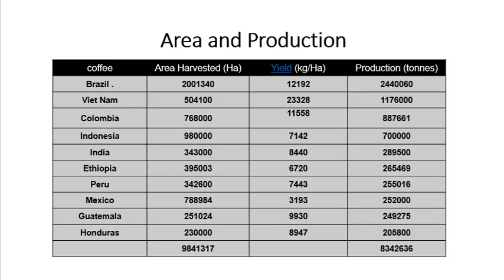Regarding area and production, coffee is mostly cultivated in Brazil, followed by Vietnam and Colombia.